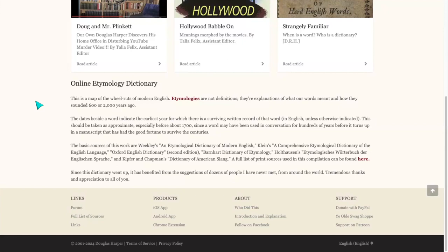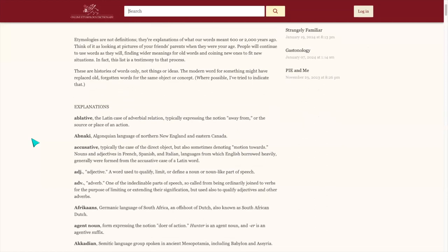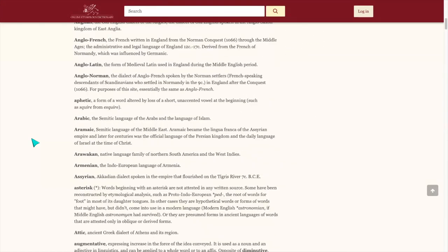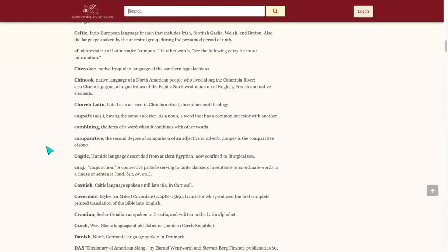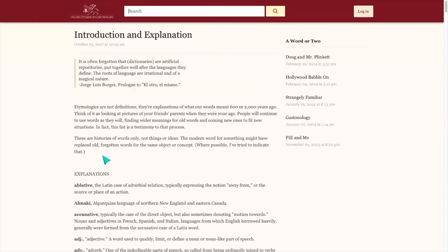As well as an explanation about what the online etymology dictionary is and isn't. If you have not spent time on this website before, I highly recommend that you check out the introduction and explanation in the about section. It allows you to understand some of the terms that Doug uses on the website, some abbreviations and things like that. It's just something to keep in mind as you're perusing the different posts or entries.